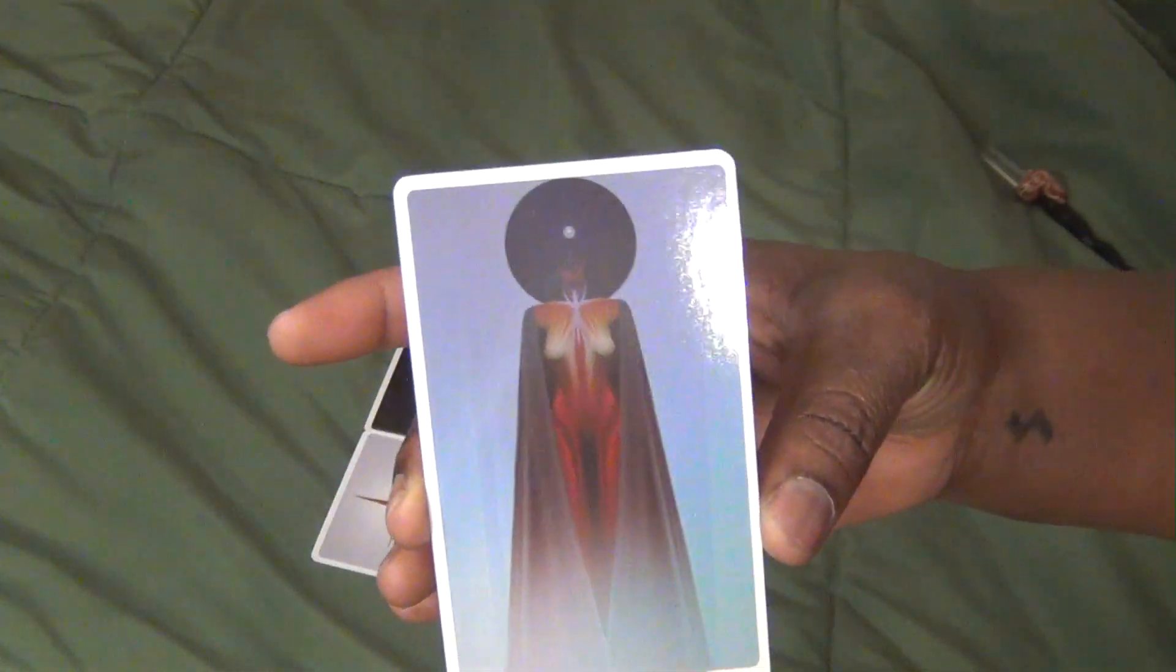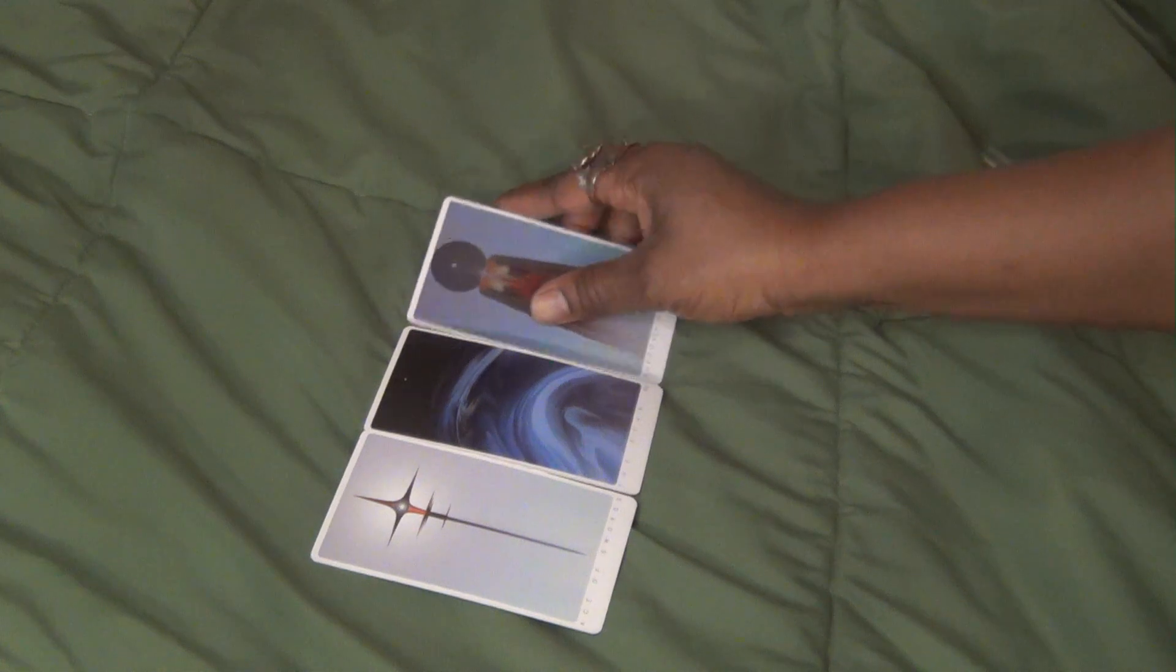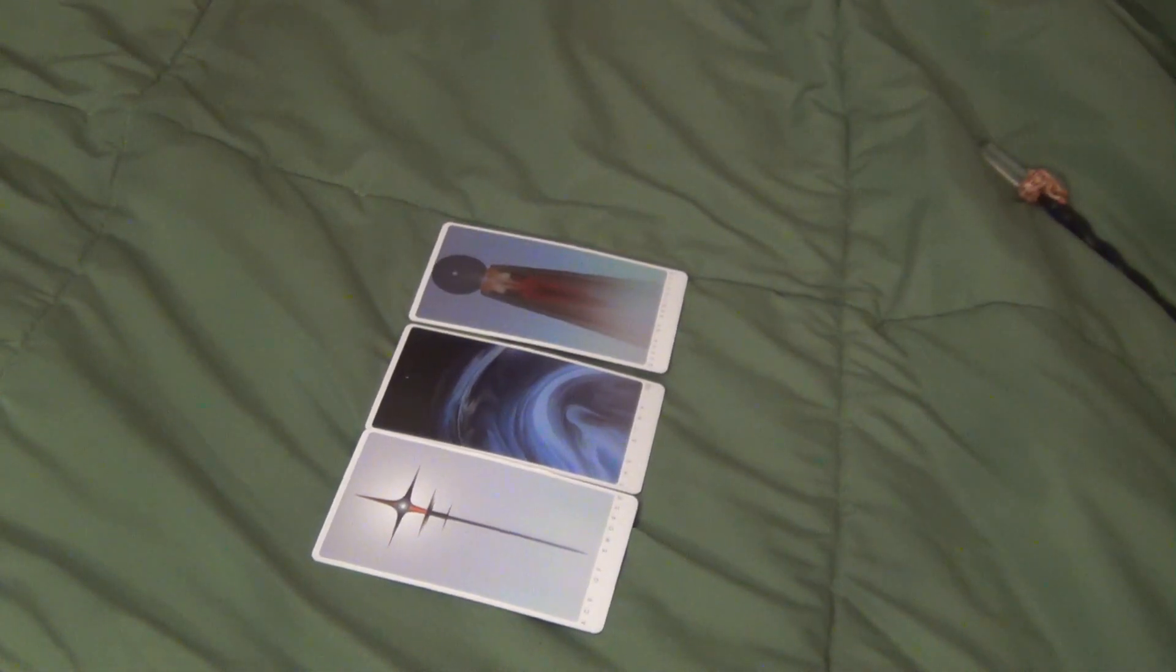Then we have the Queen of Pentacles. This looks like the Taurus reading. So Queen of Pentacles, you could be dealing with a Capricorn, Taurus, or Virgo. I was hearing like a mother figure. So a mother figure could be a focus for you. Maybe you're wanting to heal a relationship with the mother figure, or heal a relationship with somebody that's an earth sign.